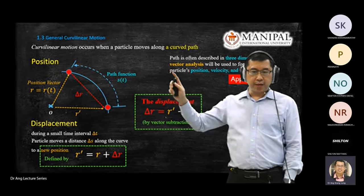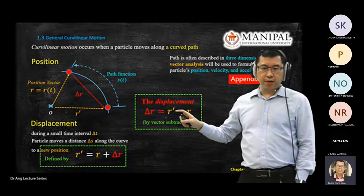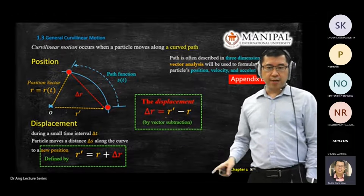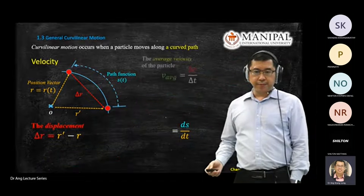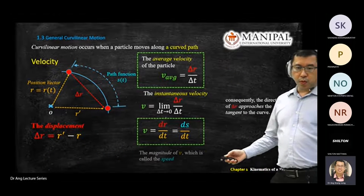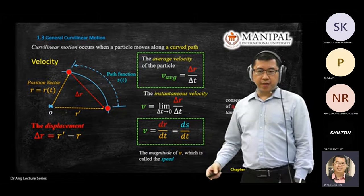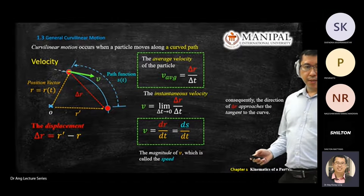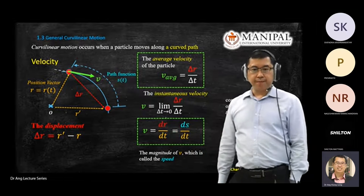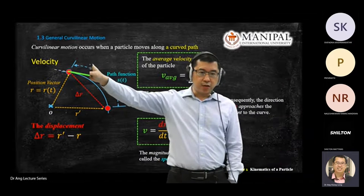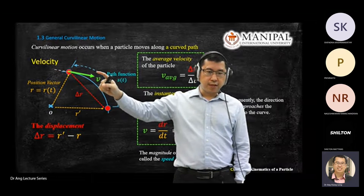For curvilinear motion, it's a bit different from a straight line path. When you have a curved path, we focus on delta R instead of S. We focus on delta R, and then dr over dt equals ds over dt when we want to find velocity. Velocity is a vector, and this vector is at the tangent of the path — tangent of the path is where your vector is.